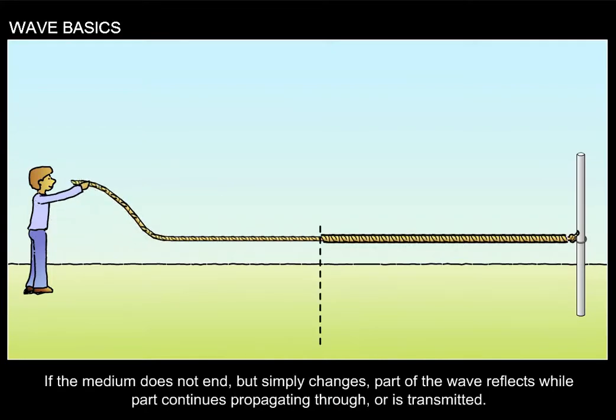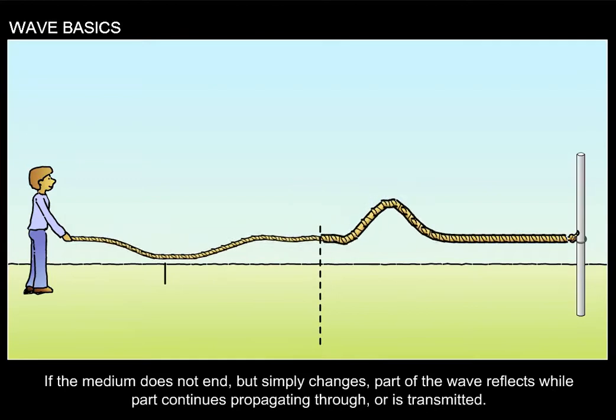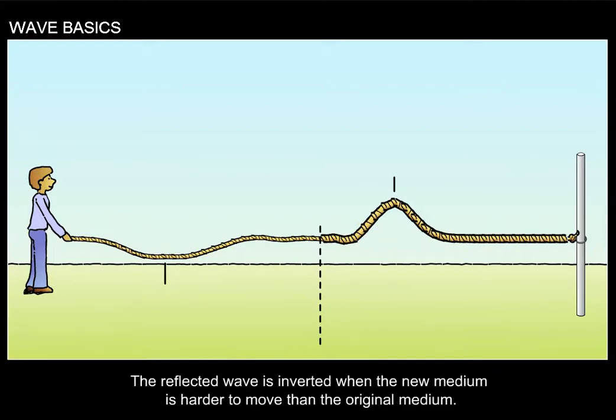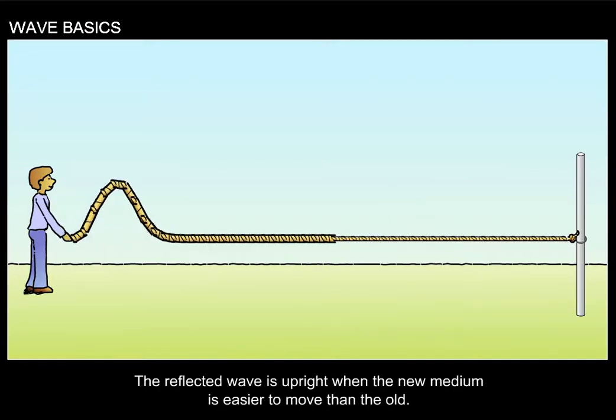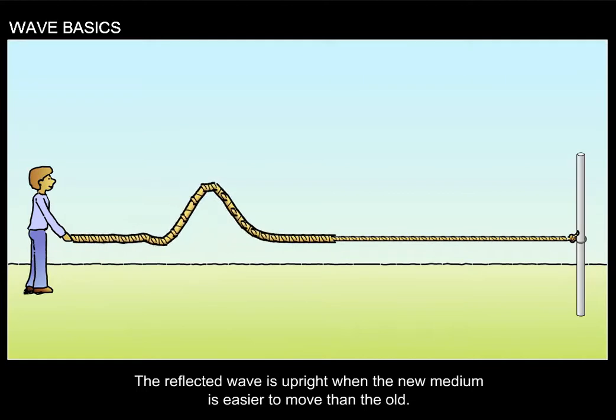If the medium does not end but simply changes, part of the wave reflects while part continues propagating through or is transmitted. The reflected wave is inverted when the new medium is harder to move than the original medium. The reflected wave is upright when the new medium is easier to move than the old.